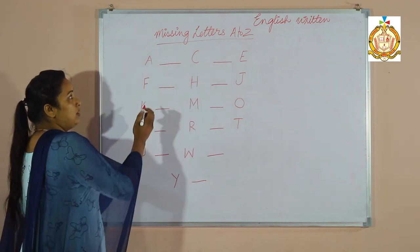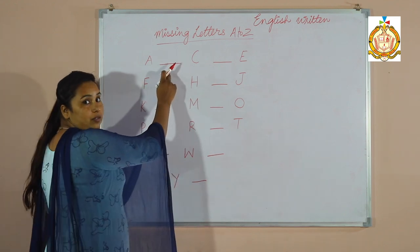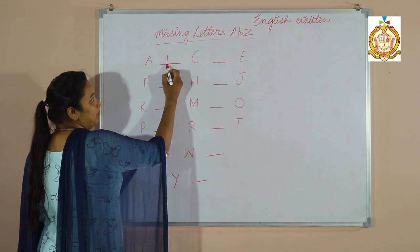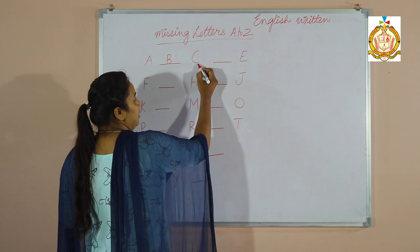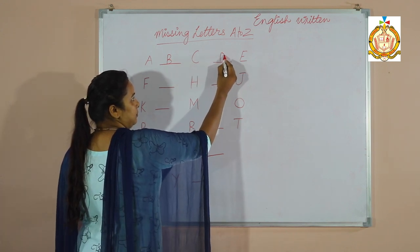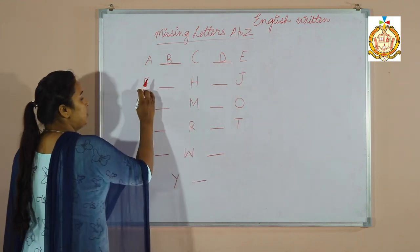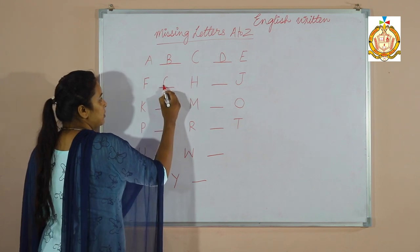First letter is A. Do you know which letter is missed from here? B. Right, B. Next is C. After then D. Next is E. Then after is F. Next G.